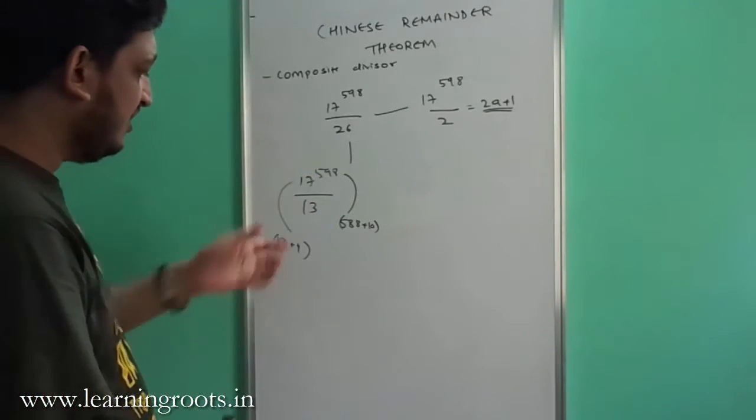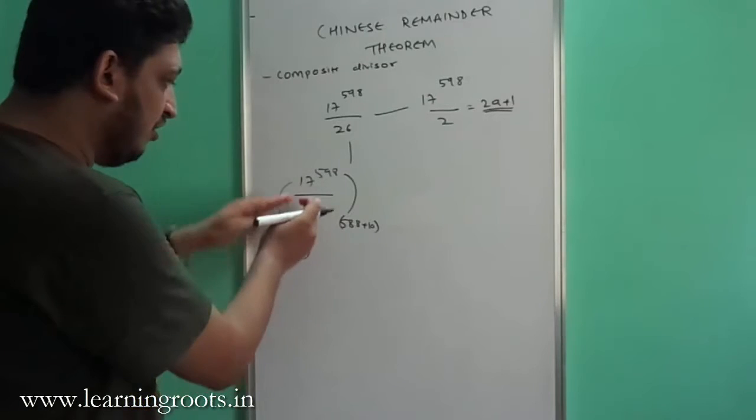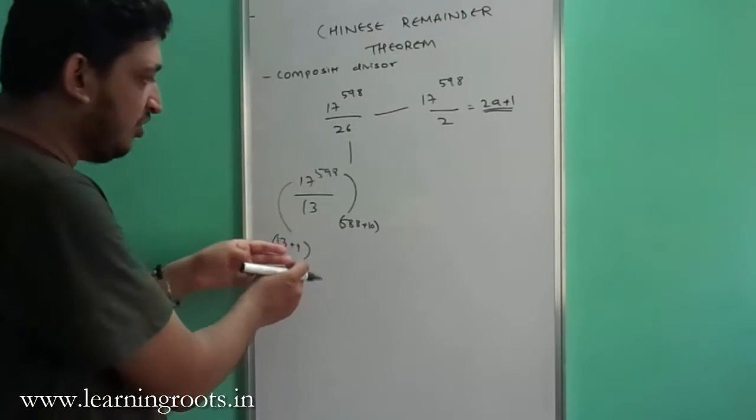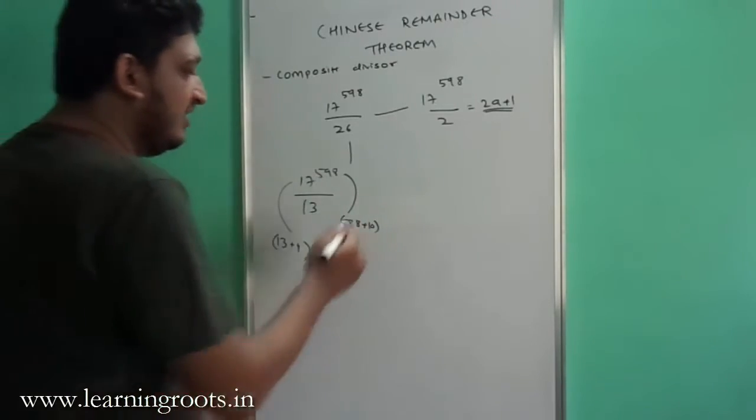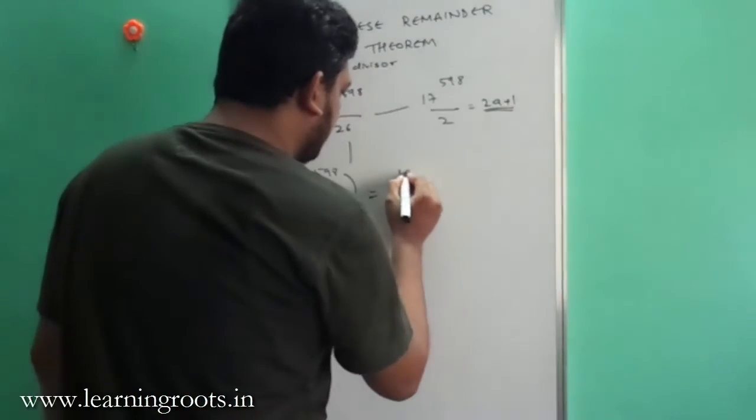To make this smaller, you will use Euler coefficient. What we get is if 13 plus 4, all 13 will be crossed out except the last part which is 4, and till 588 we are safe. So we are left with 4 raised to 10. Now this becomes 4 raised to 10 mod 13.